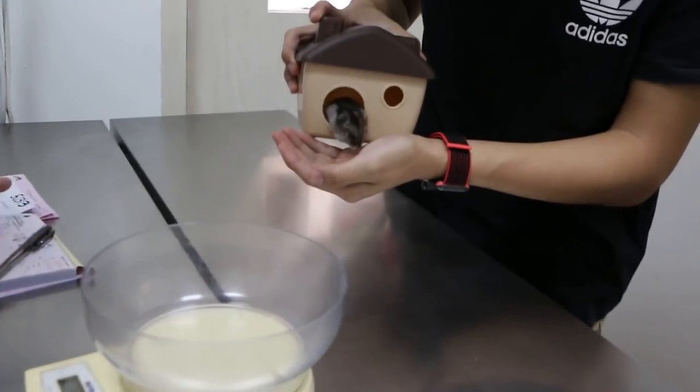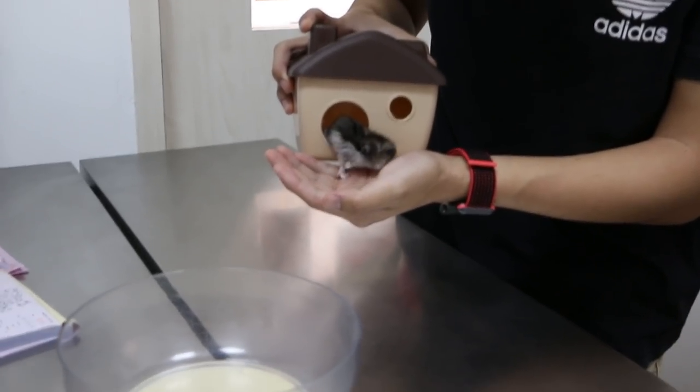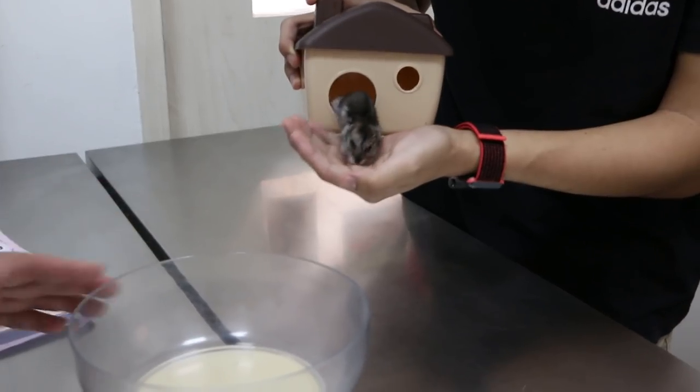Sunday. Today is 31st March 2019, Sunday. This is a two and a half year old dwarf hamster.